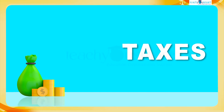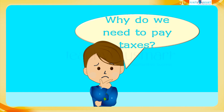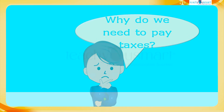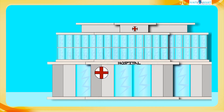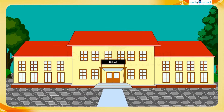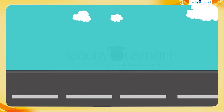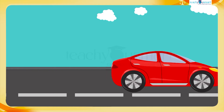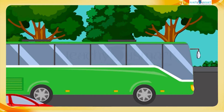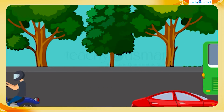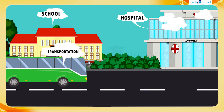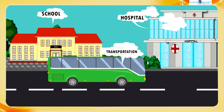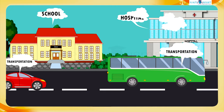First, we need to know what is tax and why do we need to pay taxes. The government provides essential facilities like hospitals, education institutes, roads, and public transportation for the citizens. For the construction and maintenance of these facilities, the government needs money. We citizens indirectly pay money to the government for these purposes through taxes.